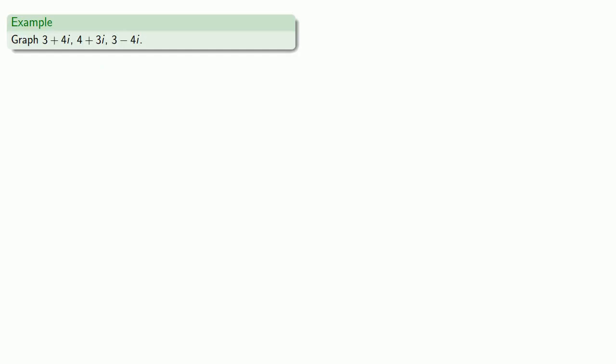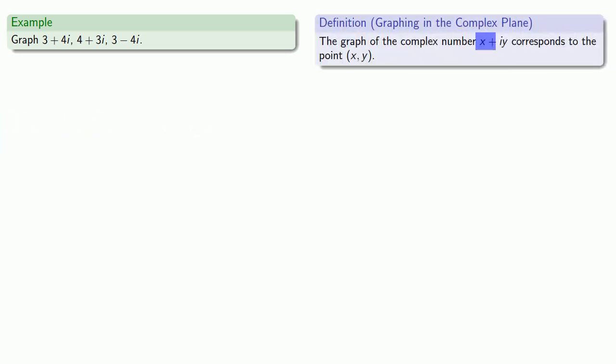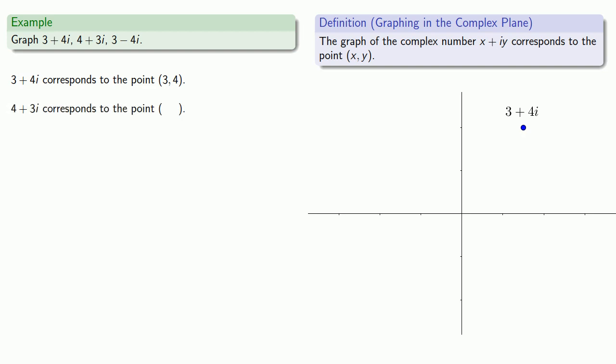So we might try to graph the points 3 plus 4i, 4 plus 3i, and 3 minus 4i. The real part gives us the x-coordinate, and the imaginary part gives us the y-coordinate. So 3 plus 4i corresponds to the point (3, 4). Meanwhile, 4 plus 3i has real part 4, so that's our x-coordinate, and complex part 3i, so our y-coordinate is 3. And 3 minus 4i has x-coordinate 3, y-coordinate negative 4.